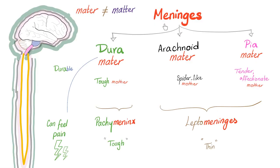In the previous video, I convinced you that you do not have one mother — you have three mothers: the dura mater, arachnoid mater, and the pia mater. Which one has the nociceptors? The dura mater. In meningitis, your meninges are inflamed.